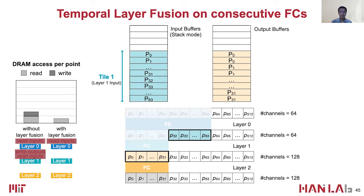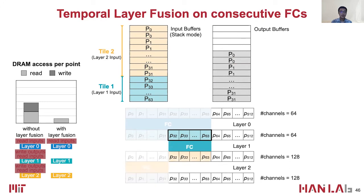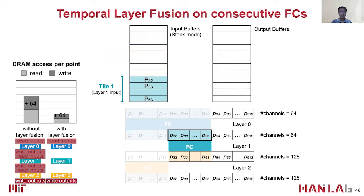Since the previous stage only uses half of the input features, point 0.0 to 0.31, the layer 1 tile capacity is halved. Switching to layer 2, the features of layer 2 are transferred from output buffers to input buffers, and the features of the final outputs are calculated. Since layer 2 is the last fused layer, we release the layer 2 features from input buffers, write back the final output to DRAM, and switch back to the previous layer, which is layer 1.